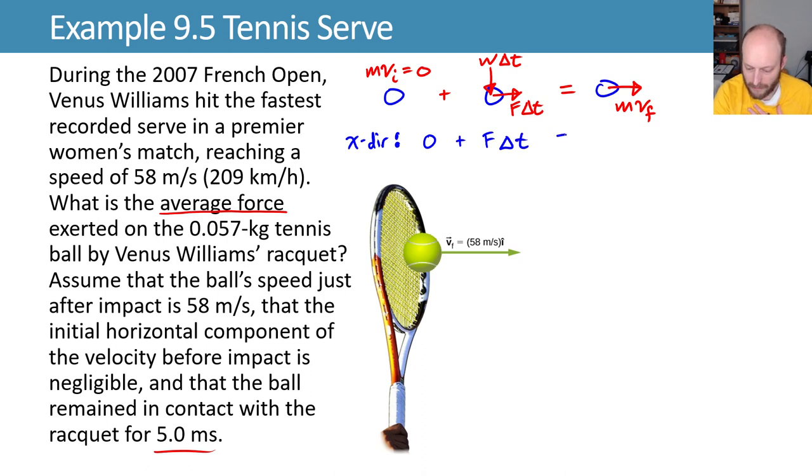and then we end up with m v final. We can solve for the thing we want to solve for, which is F by dividing both sides by delta t. We get F is equal to m v final over delta t.